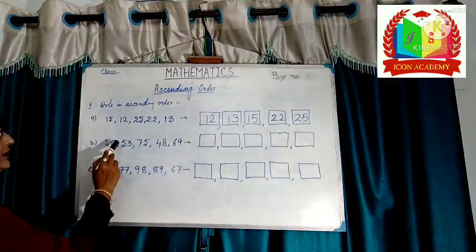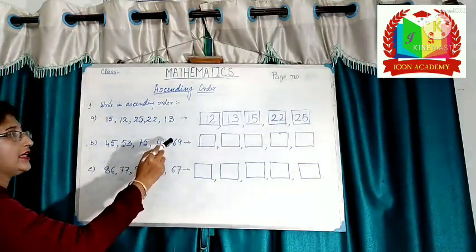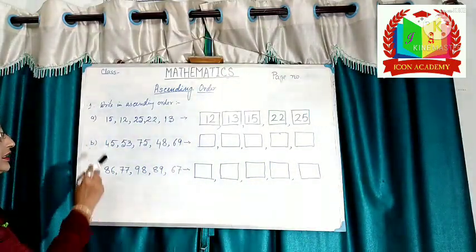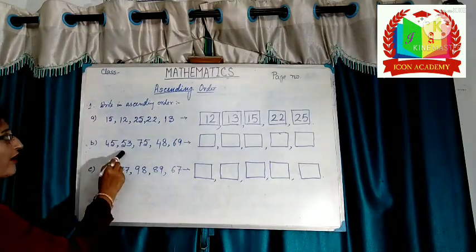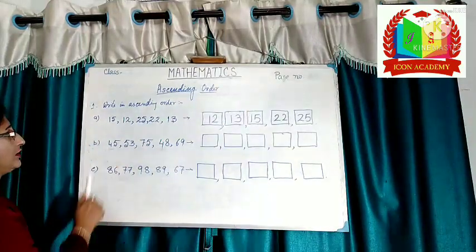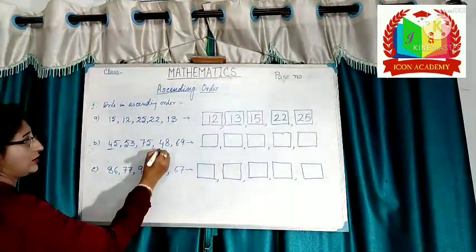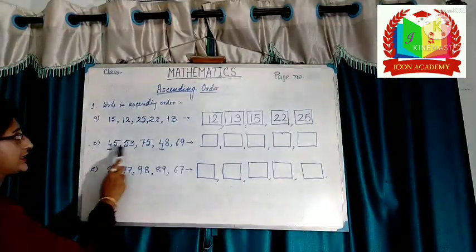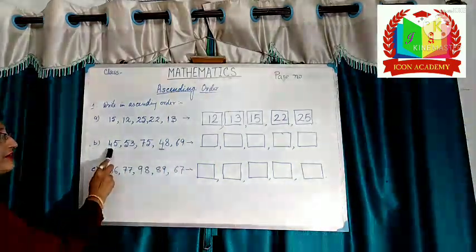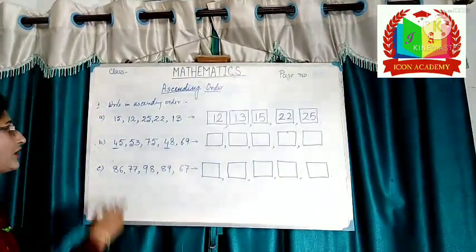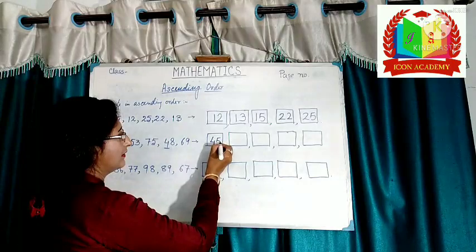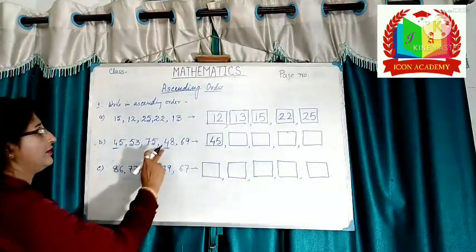Let's take one more example. Here the numbers are 45, 53, 75, 48, and 69. These are two digit numbers. At first, we see the tens place: 4, 5, 7, 4, 6. See the numbers 45 and 48 — the tens place is the same, which is 4. Now see the ones digits: 5 and 8. 5 is smaller than 8. So 45 is smaller than 48, and 45 is the smallest number in this series.